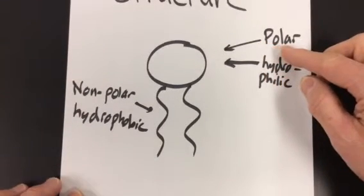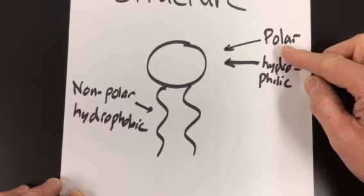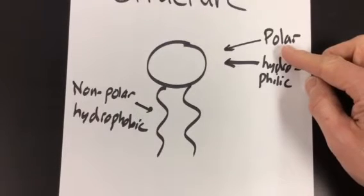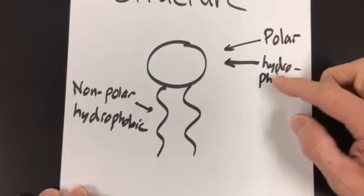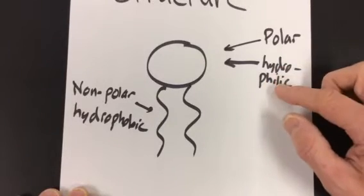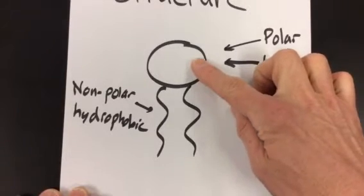Okay, so polar, what polar means is that it has some sort of charge or an unbalance of charge, and hydrophilic means that hydro water philia means to love, so it loves water. So this part here likes to be in water all the time.